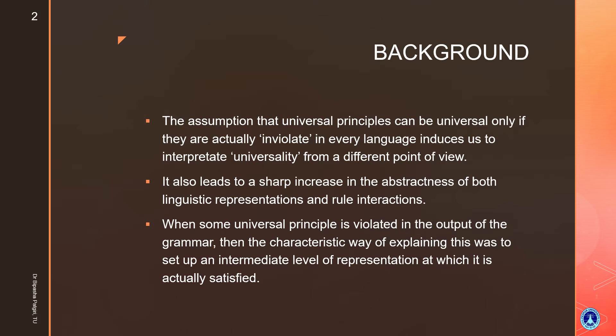What we try to convey is that some principles are universal in nature, but those can be violated in the output. The characteristics actually explain the need to set up an intermediate level of representation — that is, something that exists between the input and output mapping.